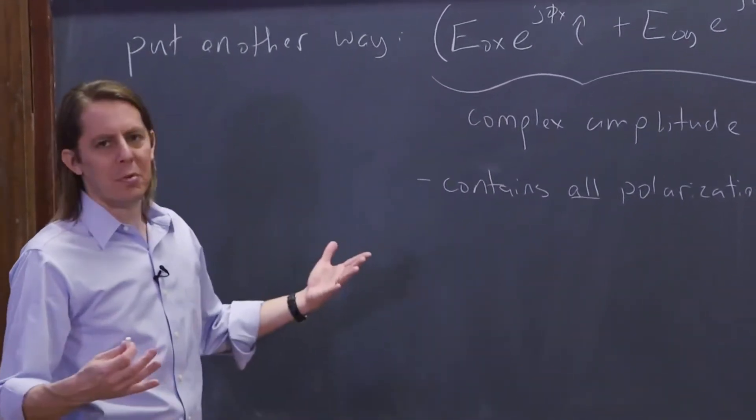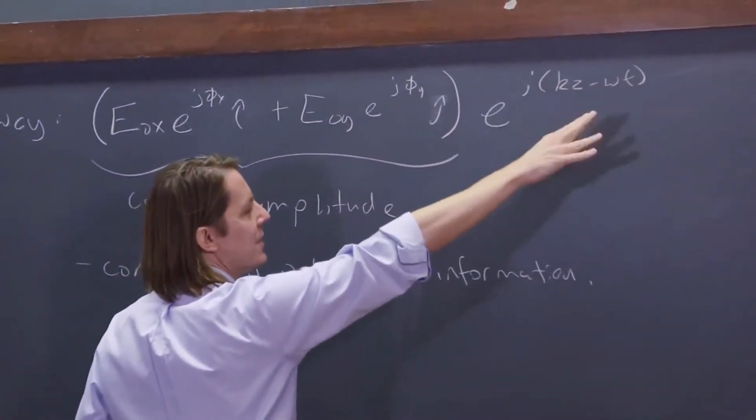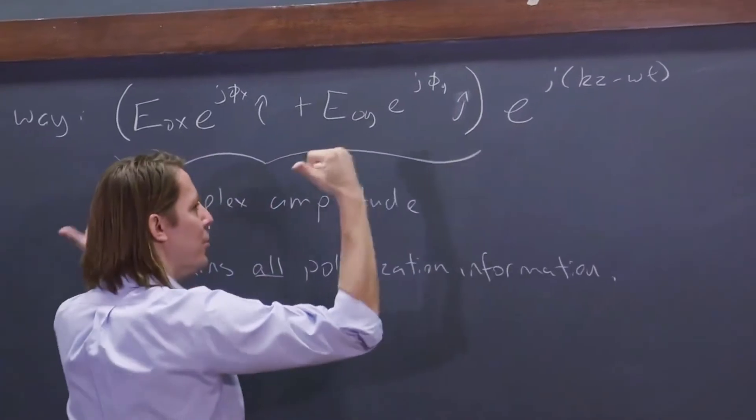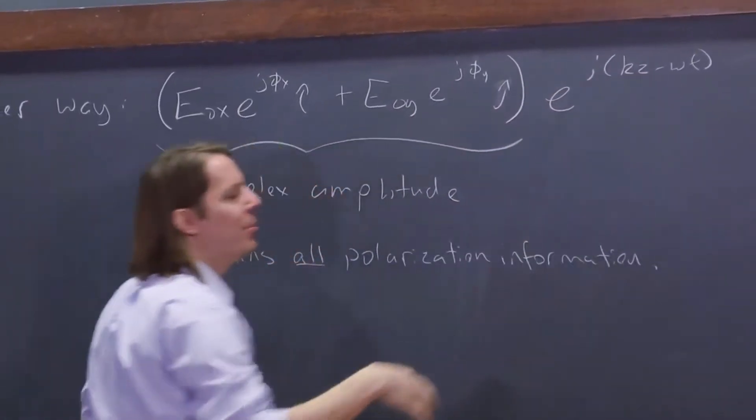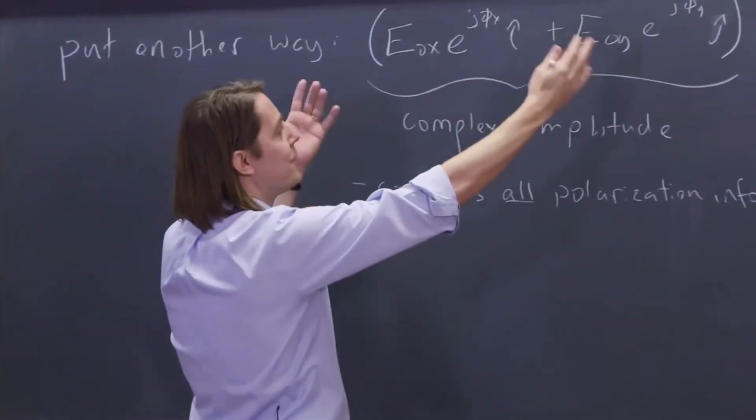And you can see sort of mathematically why we're doing what we're doing here. We know this thing is a wave. We know it oscillates at KZ minus omega T. We know that both components go on Z. We know that they both oscillate at the same frequency. That's how we set it up.